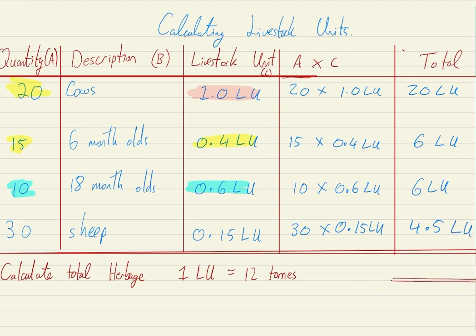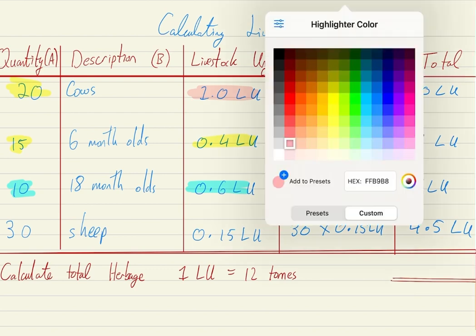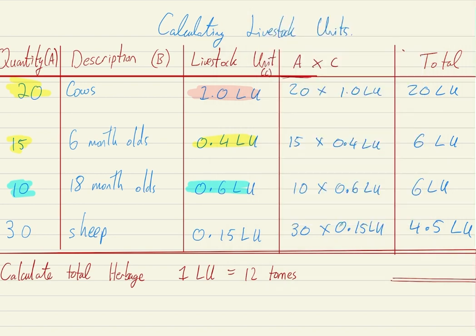To get our total for the whole farm, we add our 20, our 6, our 6, and our 4.5, and at the bottom we get a grand total of 36.5 livestock units. That is your number when calculating the total livestock units on your farm.